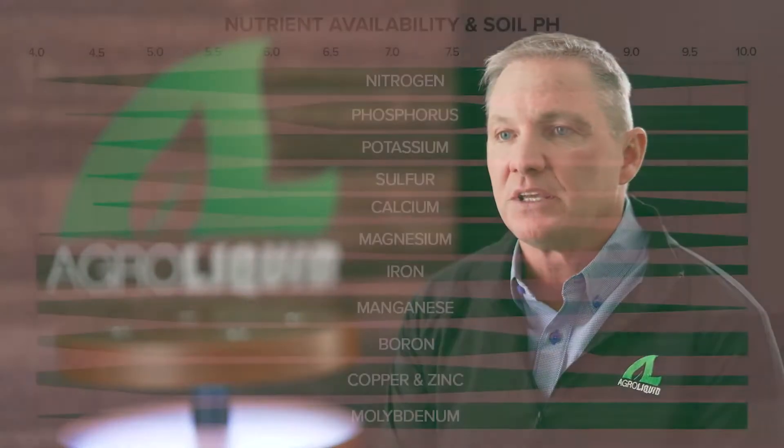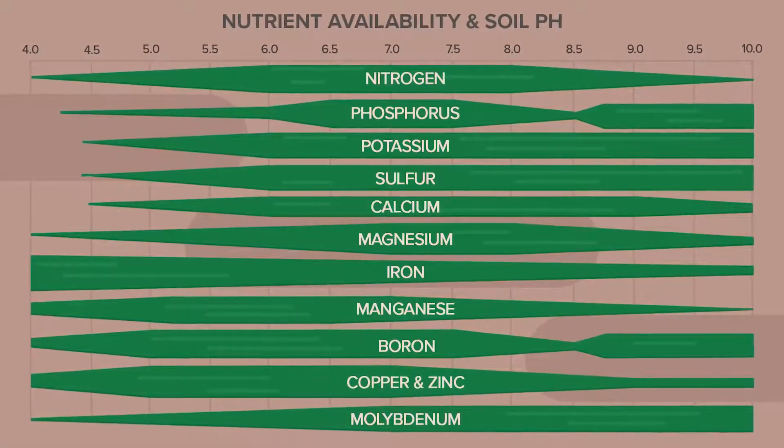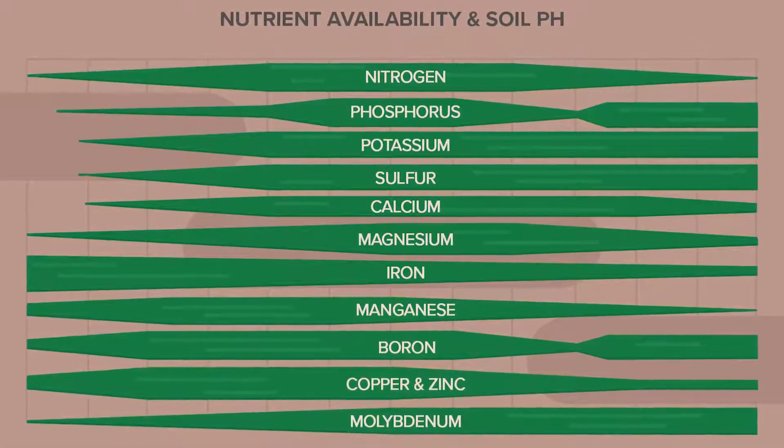A grower should be really concerned about their soil pH because it does have a direct effect on that nutrient availability. This is what's going to help that grower make good management decisions when they come to their fertility program — to make sure they're applying those nutrients that they need and be able to feed off those nutrients that are already available in their soil. The whole idea of getting your pH in that 6.0 to 7.0 range is to try to make sure that the nutrient availability is at its maximum potential for the crop to take it up. If we have our pH balanced, we have a better opportunity to make a better ROI.